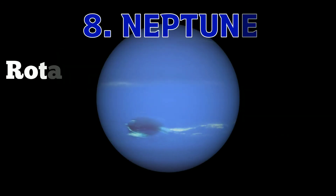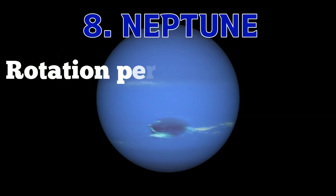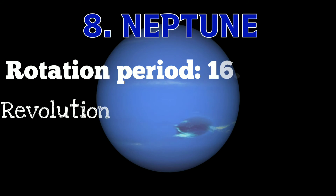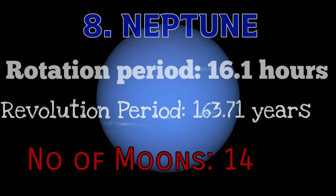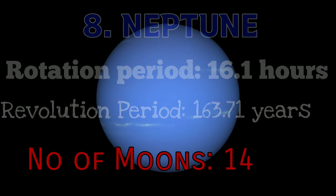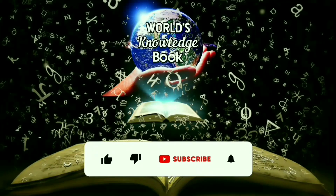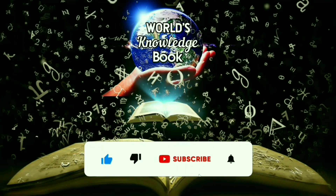Neptune: Rotation Period 16.1 Hours, Revolution Period 163.71 Years, Number of Moons 14.